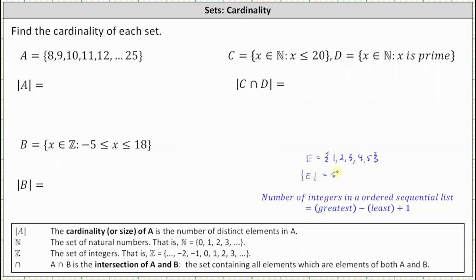But using the formula, another way to determine the number of elements in the set, because we have an ordered sequential list of integers, is to take the largest value of 5, subtract the least value of 1, and then add 1. Notice this gives us 4 plus 1, which is equal to 5. Just keep in mind this only works when we have a list of integers that are ordered and sequential, meaning no integers are missing from the list.